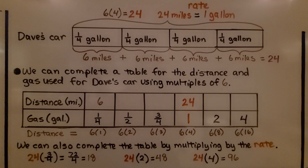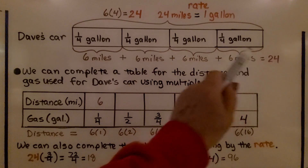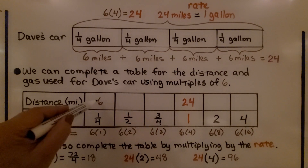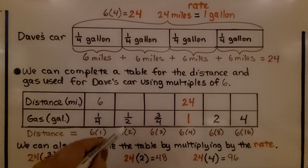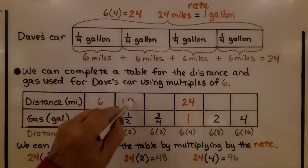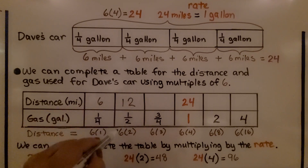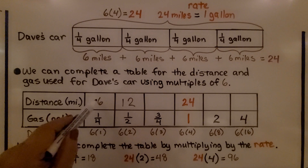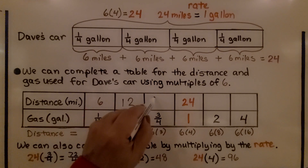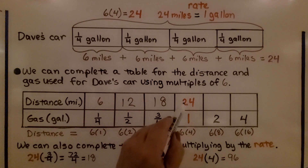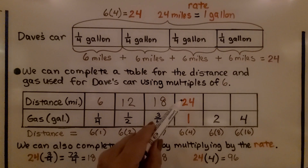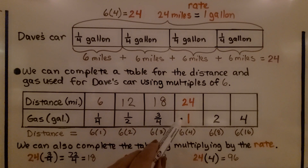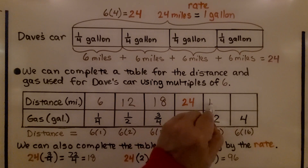We can complete a table for the distance and gas used for Dave's car using multiples of six. One-fourth gallon is six miles. One-half — that's two-fourths — would be 12, so six times two. For three-fourths, we'd have three of these, so six times three equals 18. Six times four is 24. Since 24 miles is one gallon, then two gallons must be 48.